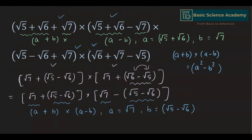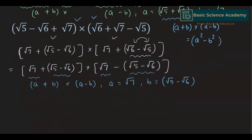For the first two expressions, a equals √5 + √6 and b equals √7. This gives us a² = (√5 + √6)² and b² = (√7)².